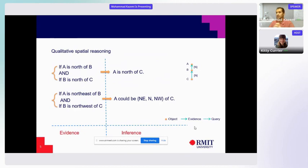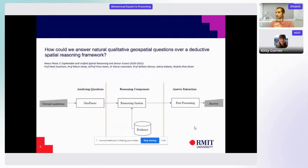For example, if A is northeast of B and B is northwest of C, in this case A could be northeast, north, or northwest of C based on the different positions of C with respect to B. So the interesting part here for us was how can we answer natural qualitative spatial questions using deductive reasoning.